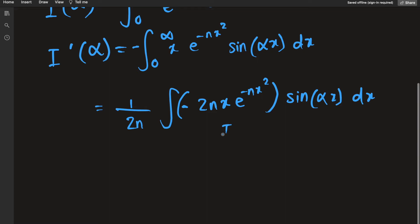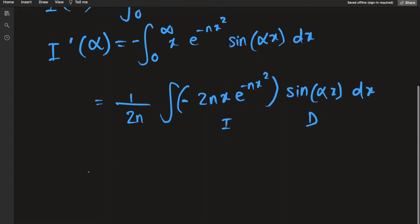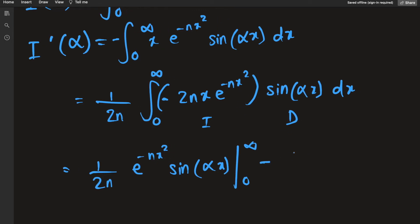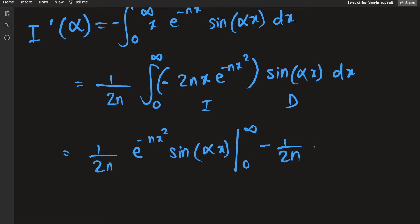This is useful because now we can do integration by parts. We integrate the bracketed term and differentiate the sine part. So we get 1 over 2n times e to the negative nx squared, keeping the sine as is, evaluated from 0 to infinity, minus 1 over 2n times the integral from 0 to infinity of e to the negative nx squared times alpha cosine of alpha x dx.